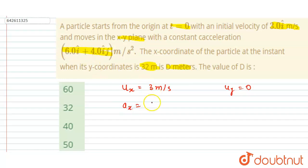The x component is 6 m/s² and ay is 4 m/s².